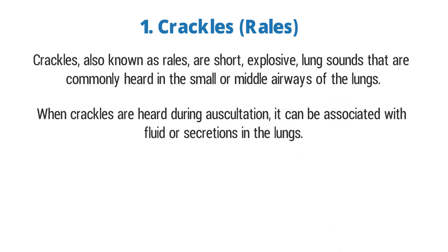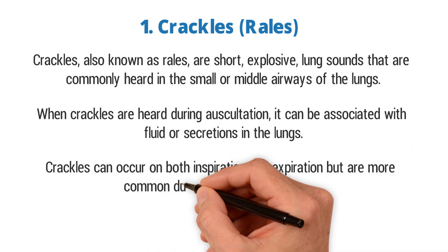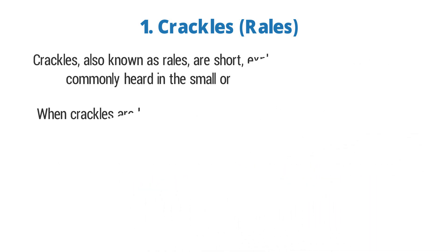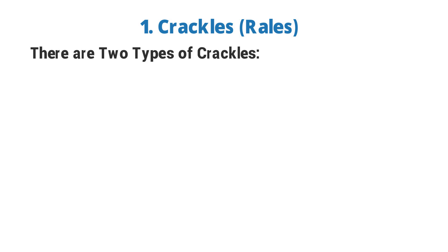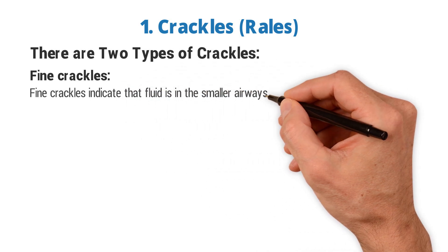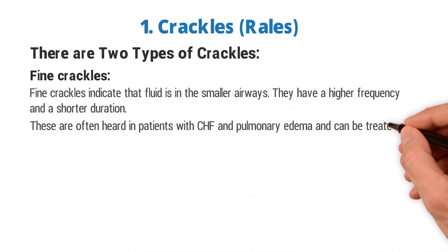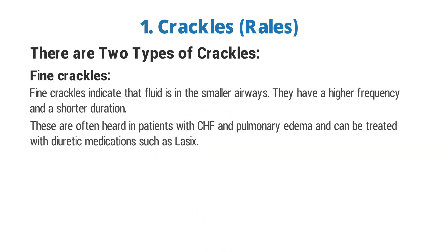When crackles are heard during auscultation, this can be associated with fluid or secretions in the lungs, more specifically in the smaller middle airways. Crackles can occur both on inspiration and expiration but are more common during the inspiratory phase. There are two types of crackles: fine crackles indicate that fluid is in the smaller airways — they have a higher frequency and a shorter duration and are often heard in patients with CHF and pulmonary edema, and can be treated with diuretic medications such as Lasix.